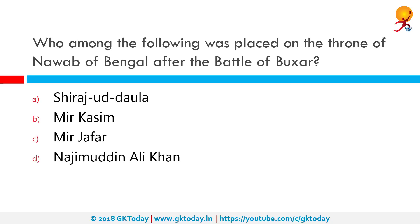Who among the following was placed on the throne of Nawab of Bengal after the Battle of Buxar? The Battle of Buxar happened between the then Nawab of Bengal, Mir Qasim. Mir Qasim was overthrown by the British and this battle was fought on 22nd October 1764. Before Mir Qasim, Mir Jafar — his father-in-law — was the Nawab of Bengal, who had helped the British defeat Siraj ud-Daulah and gain the throne. Once Mir Qasim was defeated, Mir Jafar again gained control of the throne; he was installed as Nawab in 1764 and held this position until his death in 1765. So the correct answer is option C, Mir Jafar.